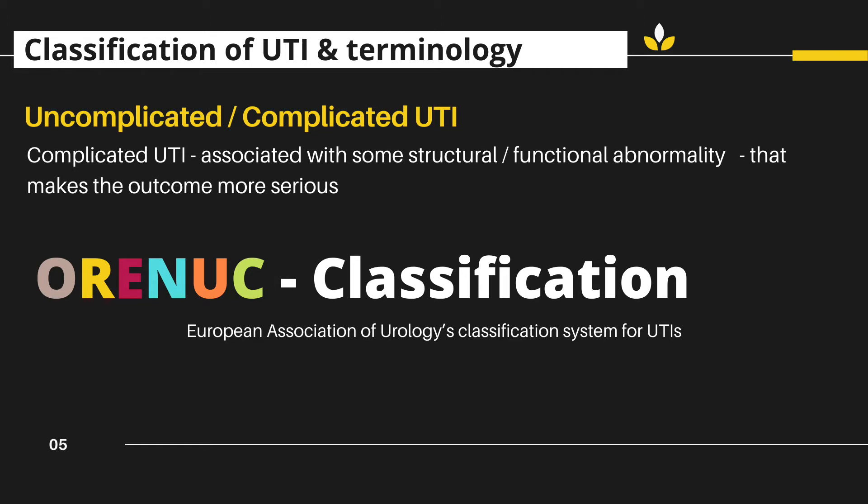Complicated UTI means one that is associated with some structural or functional abnormality of the urinary tract. The European Association of Urology gave a classification system called URENAC, which is practical and simple. In this system, O stands for zero — meaning no risk factors. R is for risk factors for recurrence, like sexual behavior, postmenopausal status, and well-controlled diabetes. E is for extra-urogenital risk factors like pregnancy, immunosuppression, and uncontrolled diabetes.